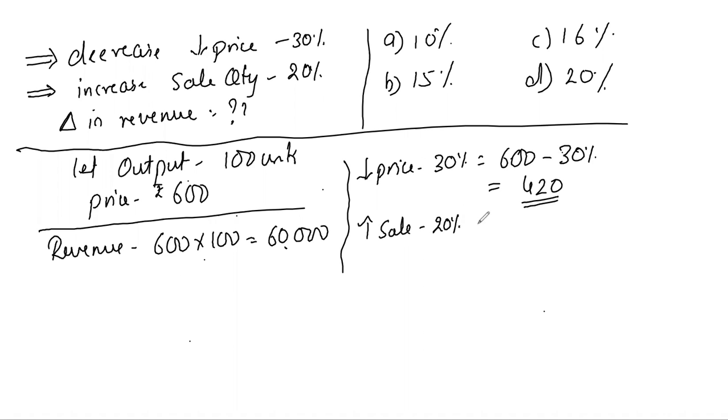Sales increased 20%, so 100 plus 20% equals 120. So my revised revenue will be 420 multiplied by 120.